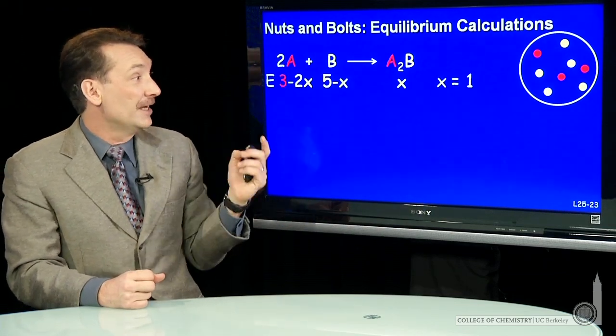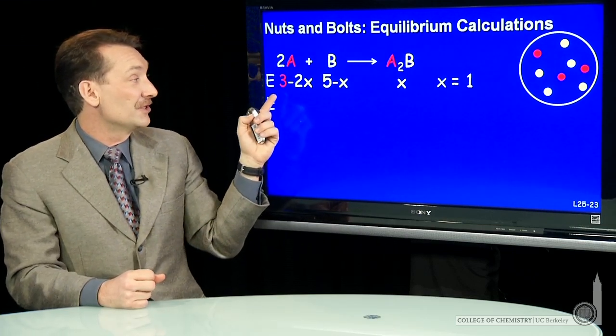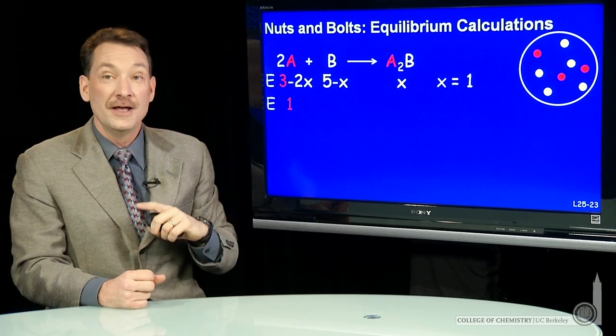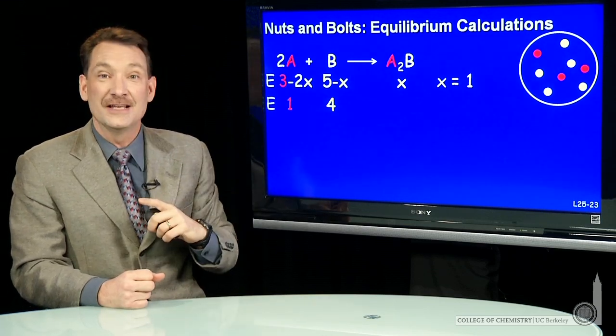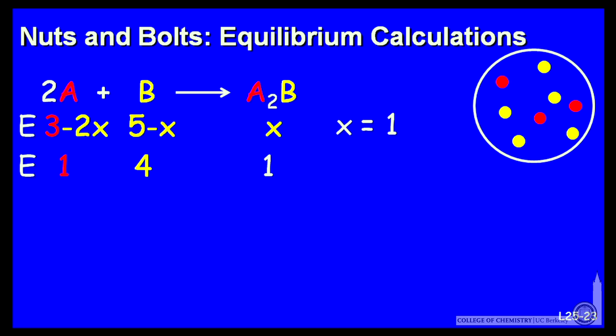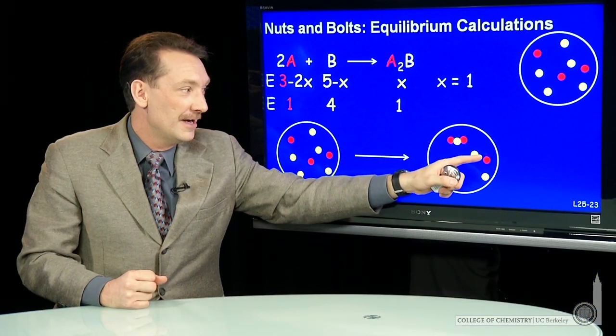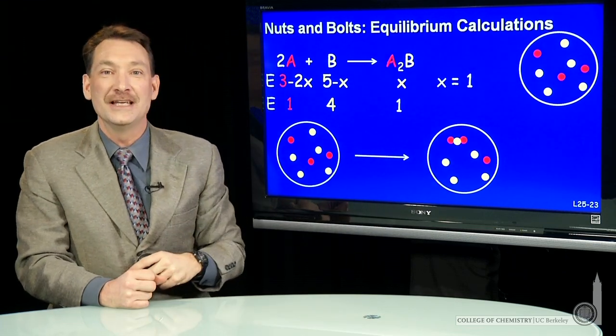So now I can draw the new schematic. My x equals 1. So I can calculate the equilibrium partial pressures. The equilibrium partial pressure is 3 minus 2x, or 3 minus 2. So the equilibrium partial pressure of A is 1. Equilibrium partial pressure of B is 4. The equilibrium partial pressure of A2B is 1. So my initial schematic looks like this. One of the B reacts with two A's to form my equilibrium situation. Here's my A2B molecule. My A's have reacted to form that A2B. And I have B and A and A2B in equilibrium.